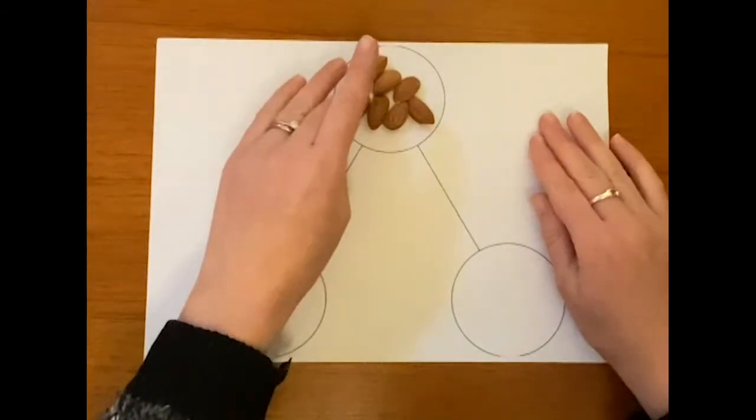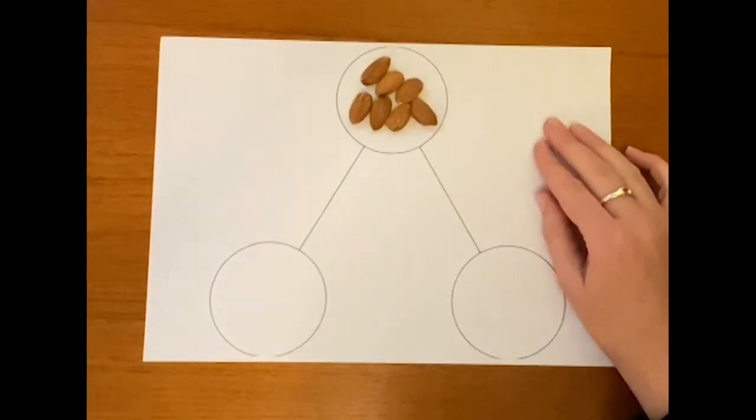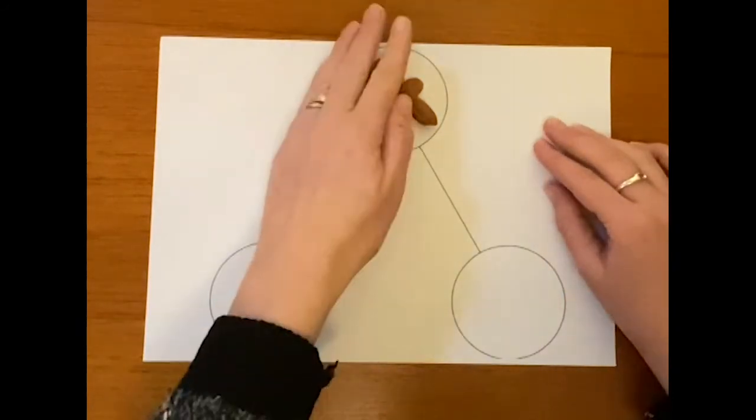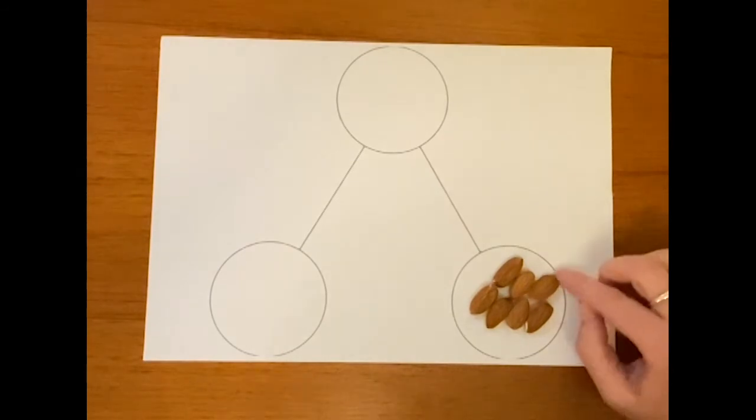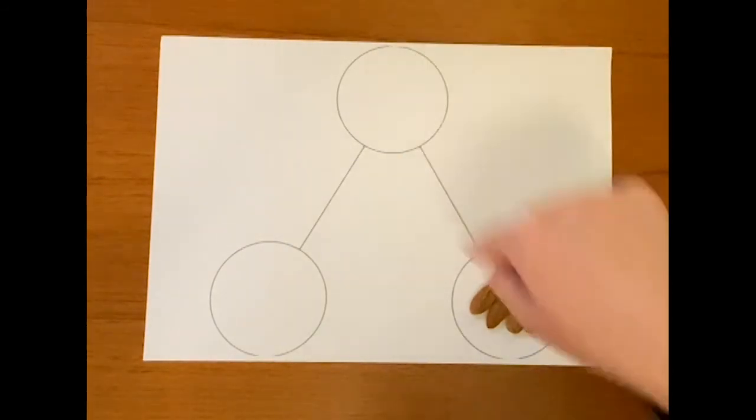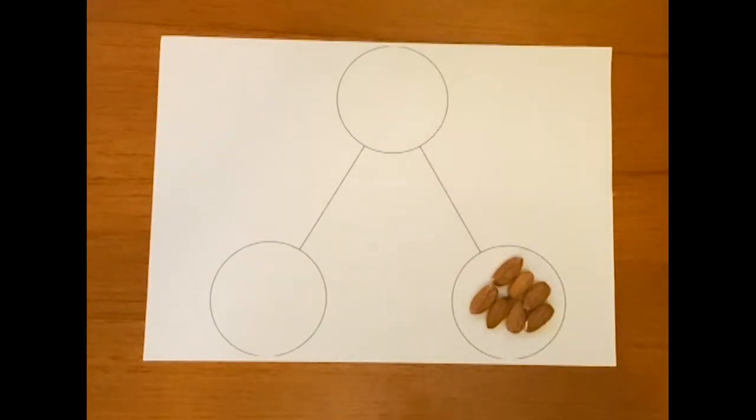I put no nuts down here. Zero nuts. All of my nuts are going to have to go down here. Whish. Don't really need to count them again, do I? Because I've just moved them from there to there. So there's got to be seven. So zero nuts add seven nuts. It's going to make seven.